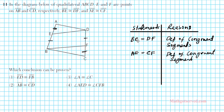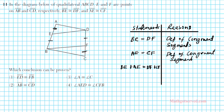Now that we have these statements, we can use the segment addition postulate to add the left and right sides of these two equations. Adding the left side: BE plus AE, and on the right side: DF plus CF. The reason for this is the addition property of equality.